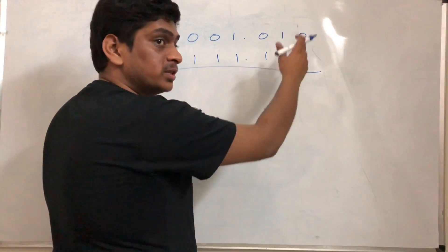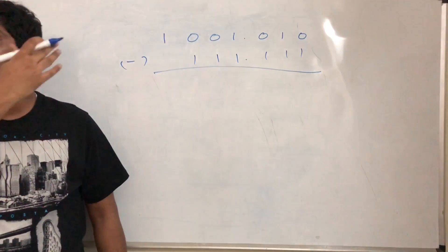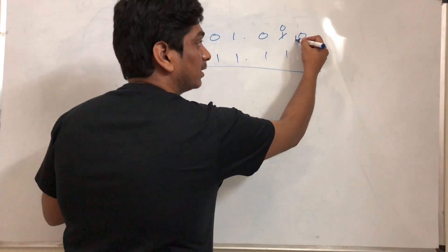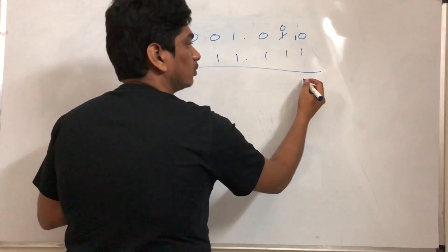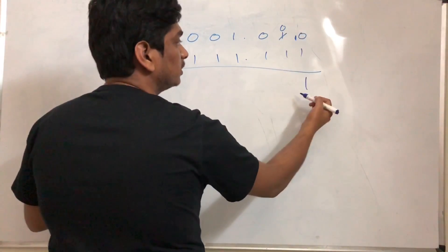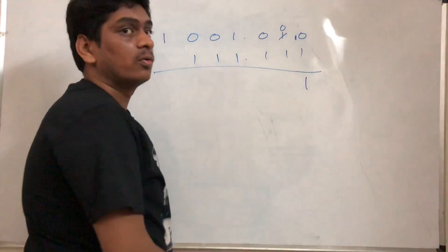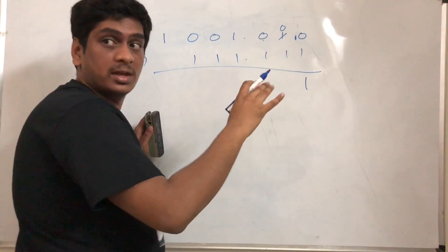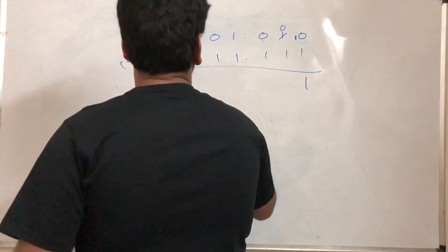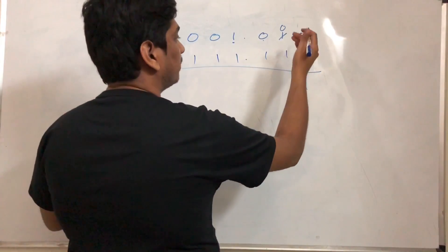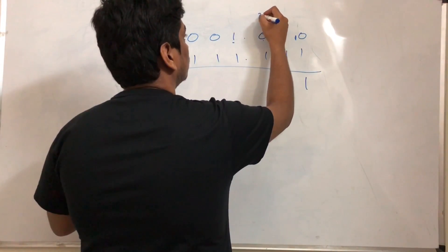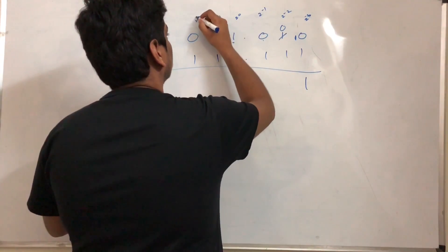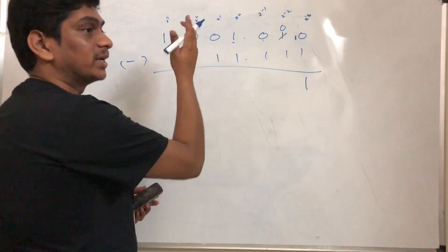The first digit: 0 minus 1 — I cannot do this without a borrow. I borrow the next 1, which becomes 0, and now I have 1 0 here. So 1 0 minus 1 is 1. Moving to the next place: 0 minus 1 again — the next place is also 0, and the place after that is also 0. The place values here are 2 power minus 1, 2 power minus 2, 2 power minus 3 for fractional parts, and 2 power 0, 1, 2, 3 for the integer part.